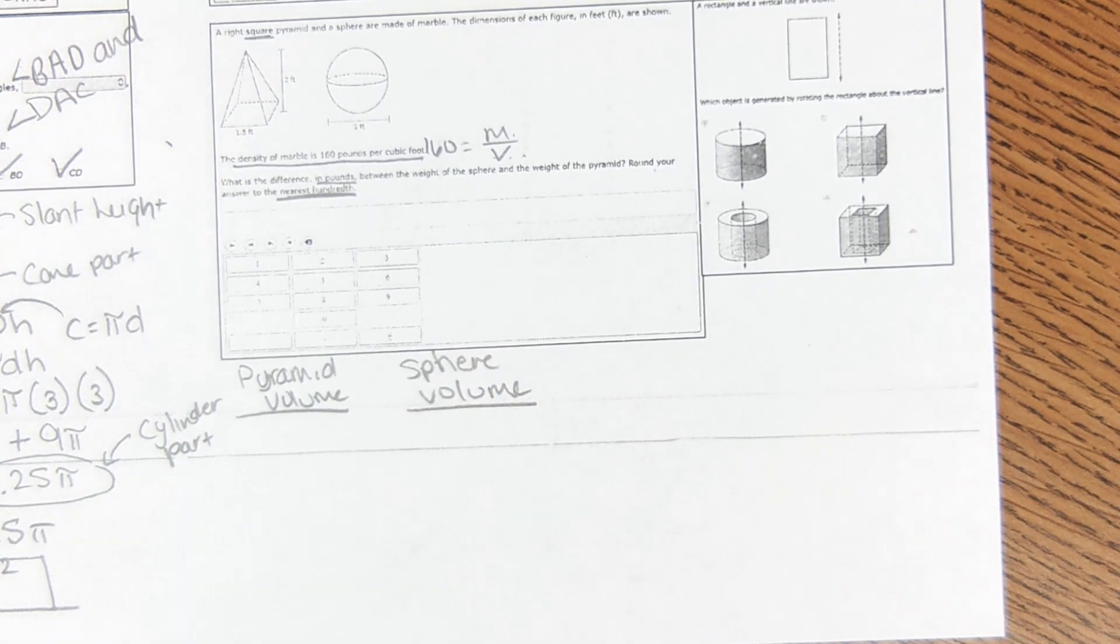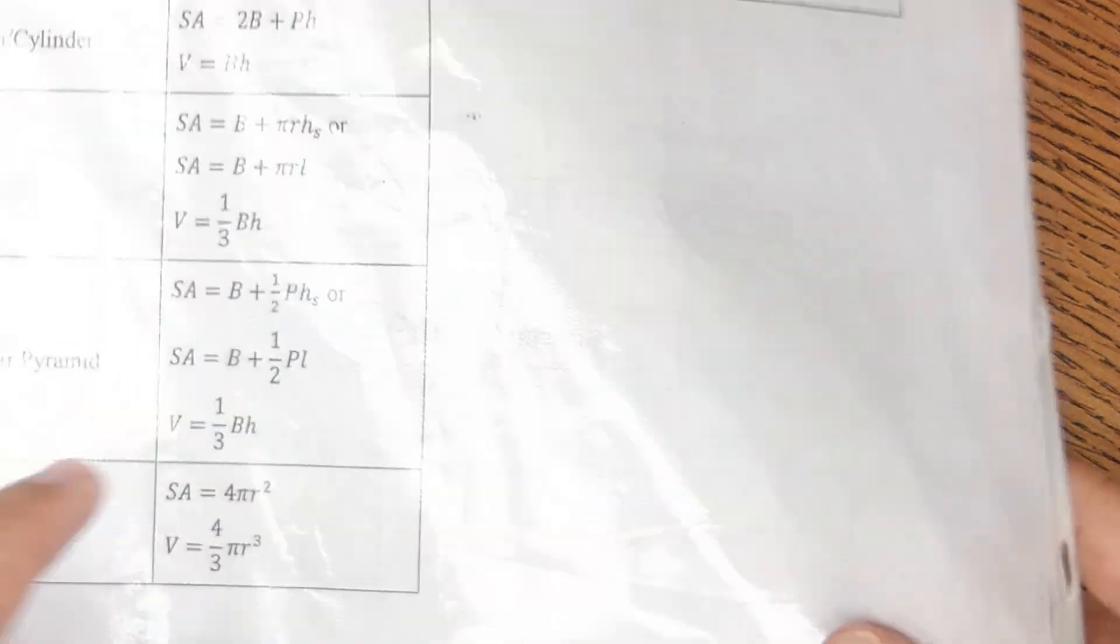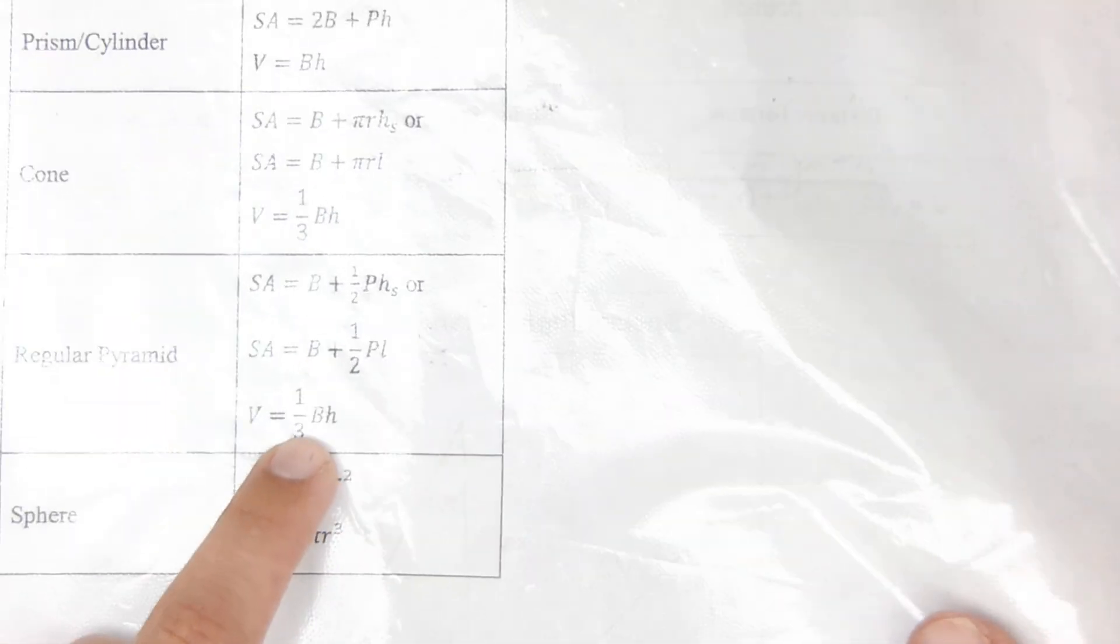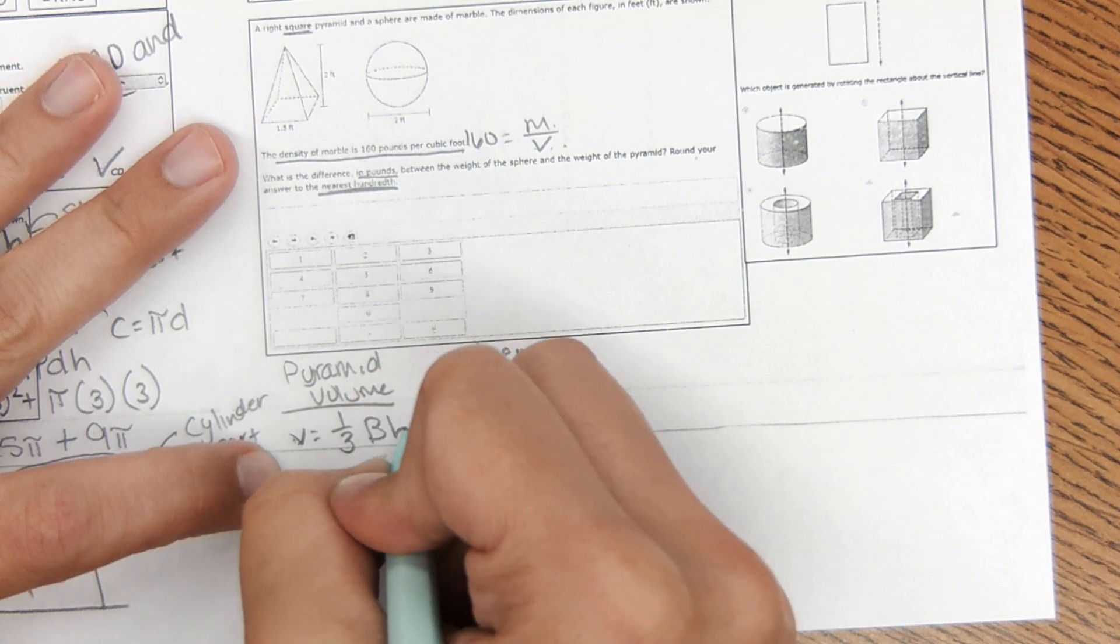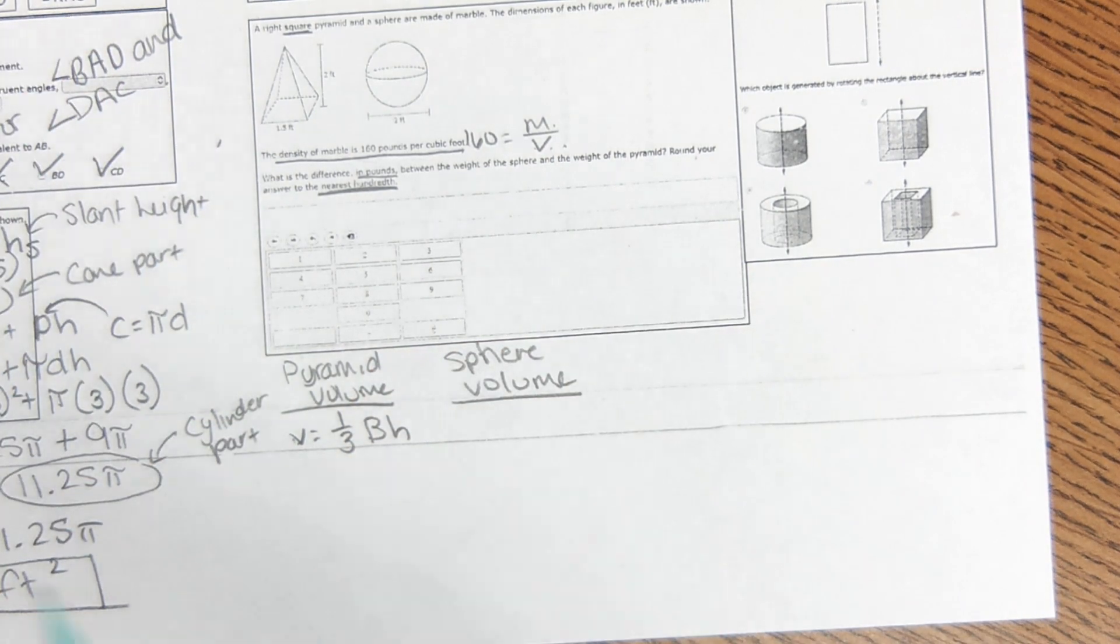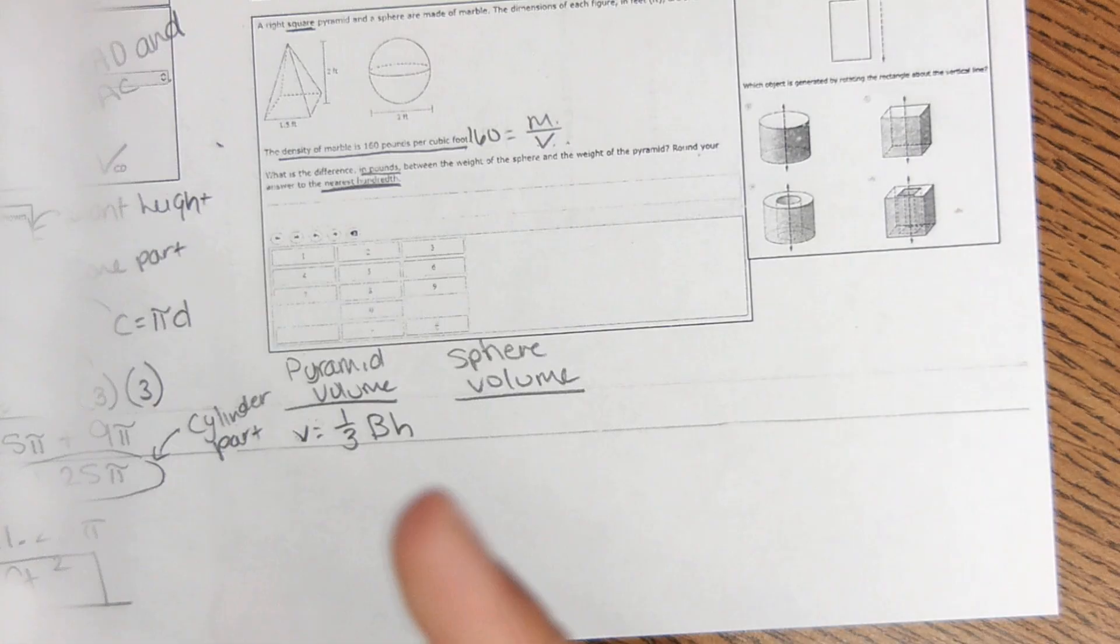So pyramid volume, I'm looking at the reference sheet. It's one-third area of the base times the height. Volume equals one-third area of the base times the height. Sphere volume, four-thirds pi r cubed.